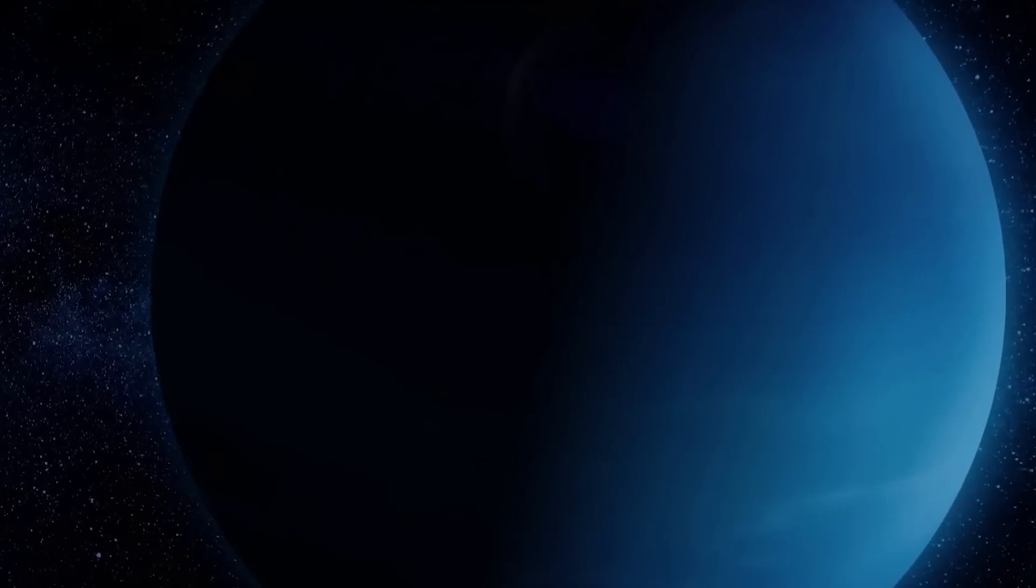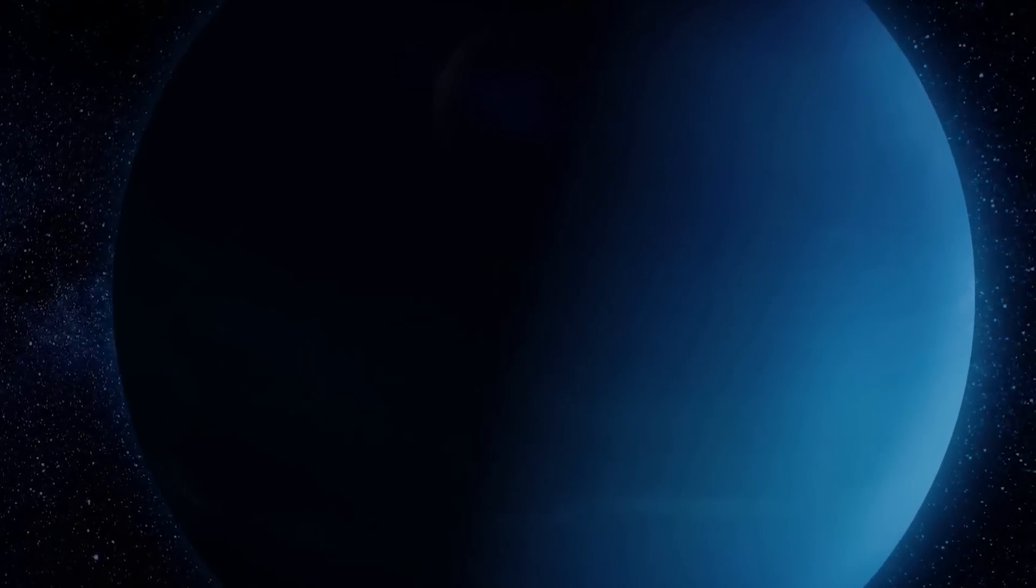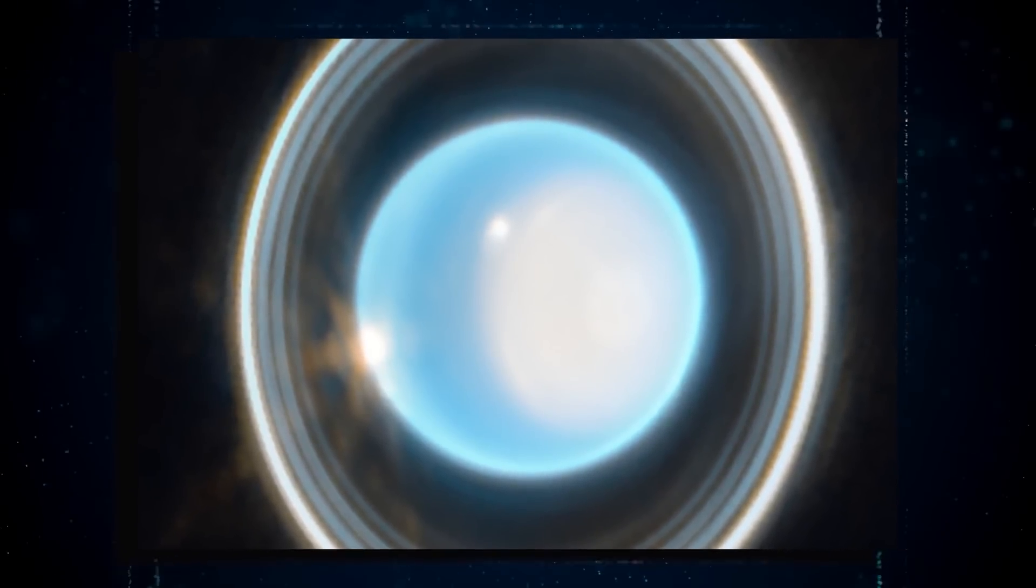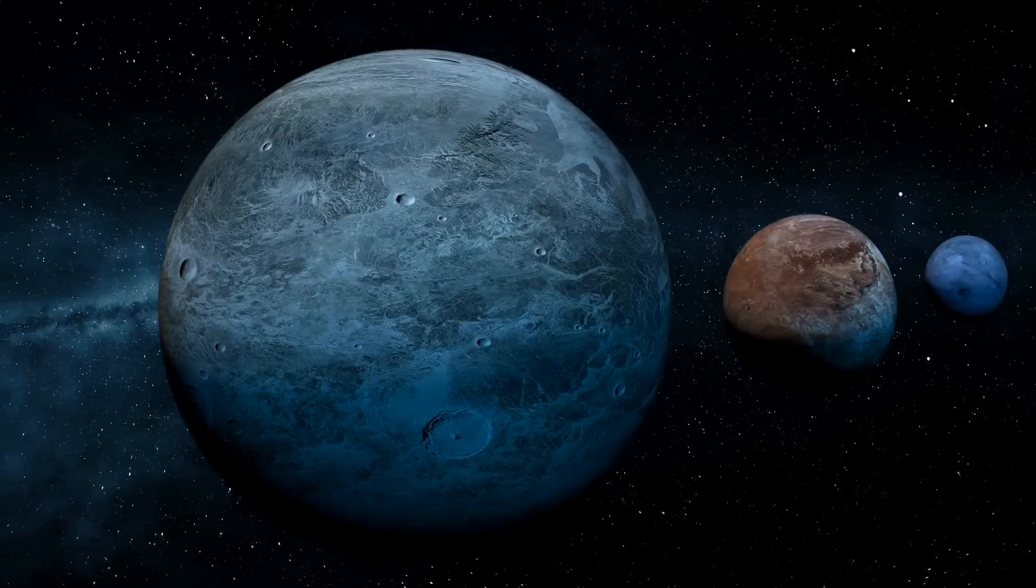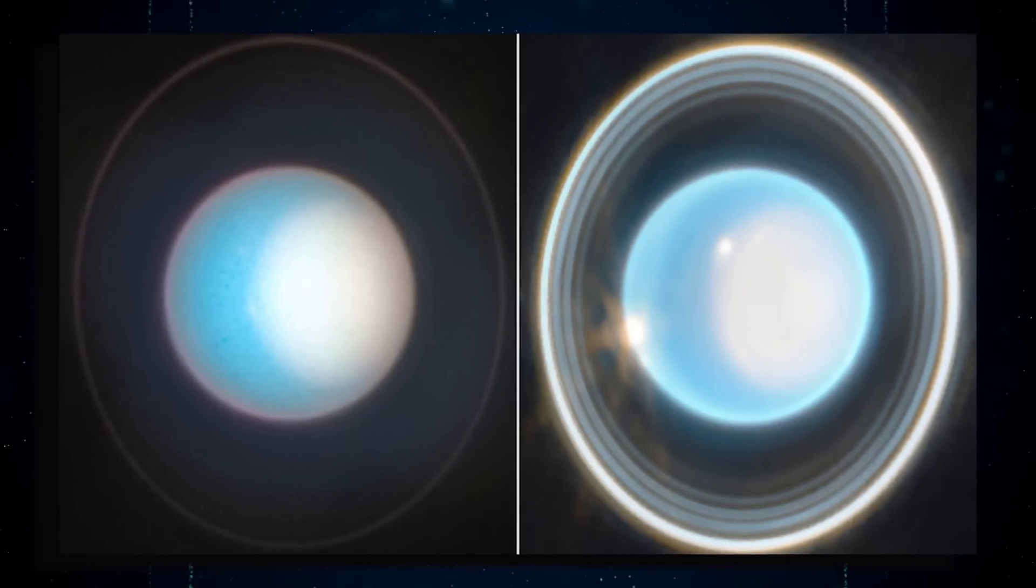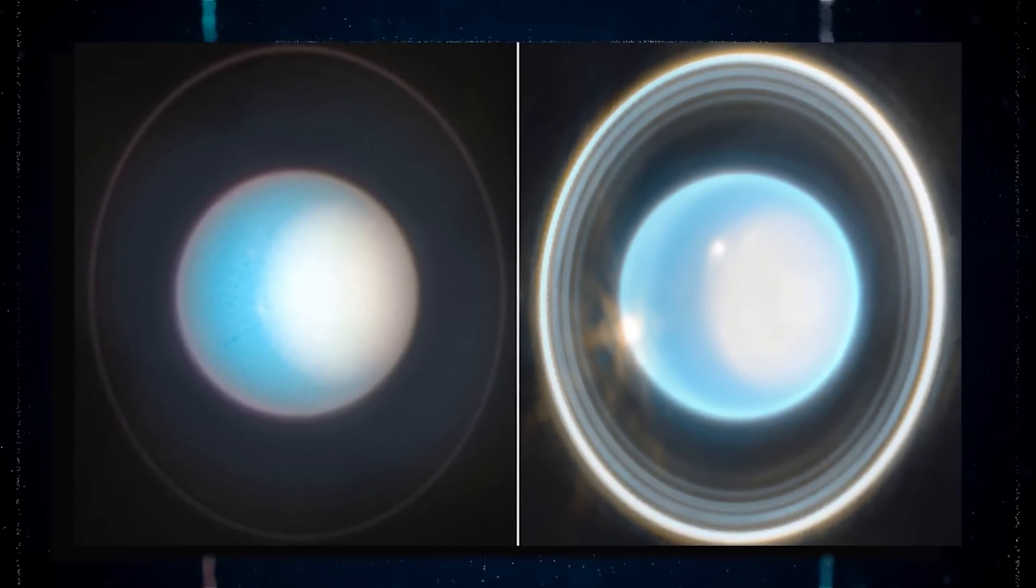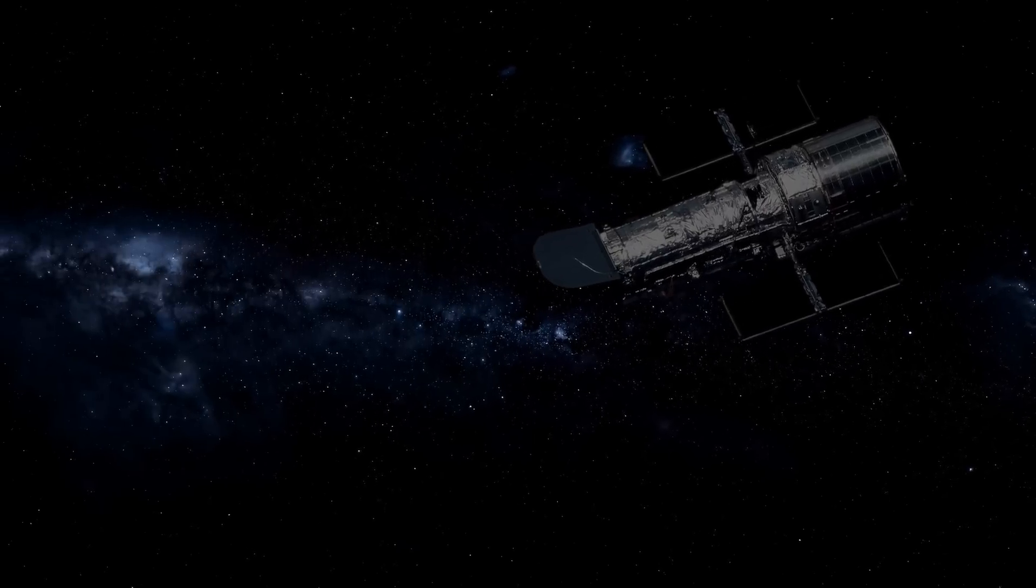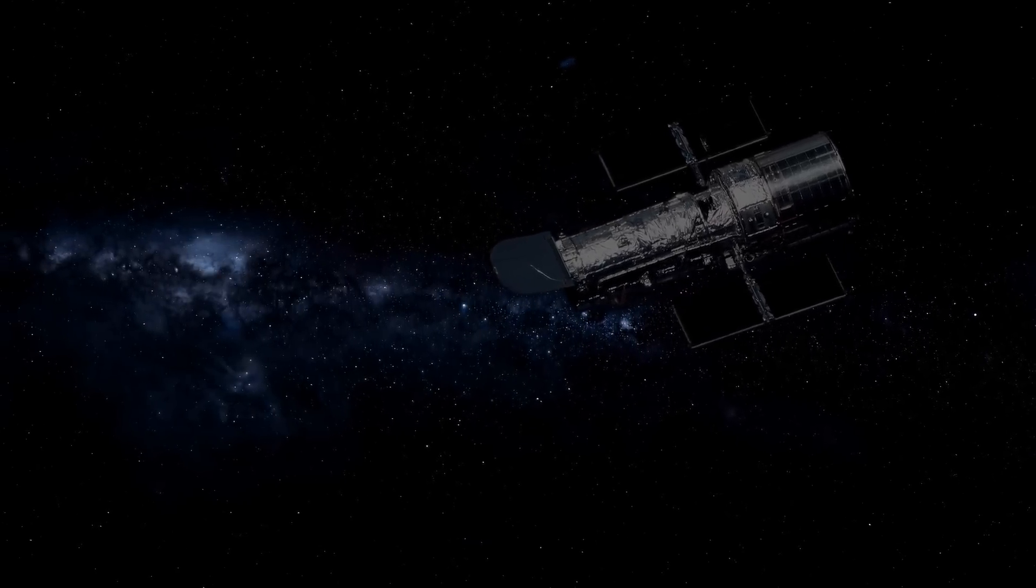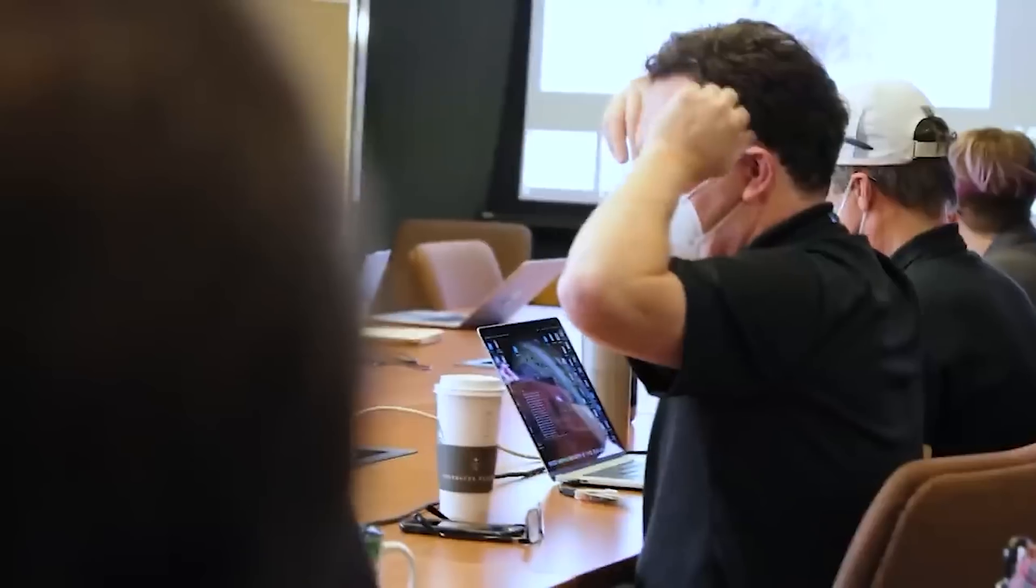The planet's polar cap is particularly intriguing, as it brightens when the pole enters direct sunlight during the summer and fades away in the fall, making it a unique feature among all planets. But what's even more fascinating is the subtle brightening at the center of the polar cap that Webb's near-cam reveals, a detail that previous telescopes have not been able to capture. The discovery of this enhanced feature will give scientists a new perspective on Uranus and how it interacts with the Sun.